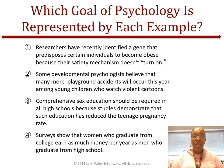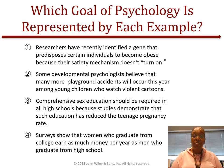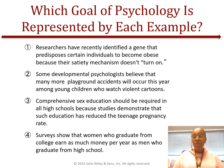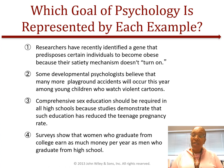Number three: comprehensive sex education should be required in all high schools because studies demonstrate that such education has reduced the teenage pregnancy rate — which of the four would you choose? Number four: surveys show that women who graduate from college earn as much money per year as men who graduate from high school — which of the four would it be? Write down your answers and find the answers on Canvas.